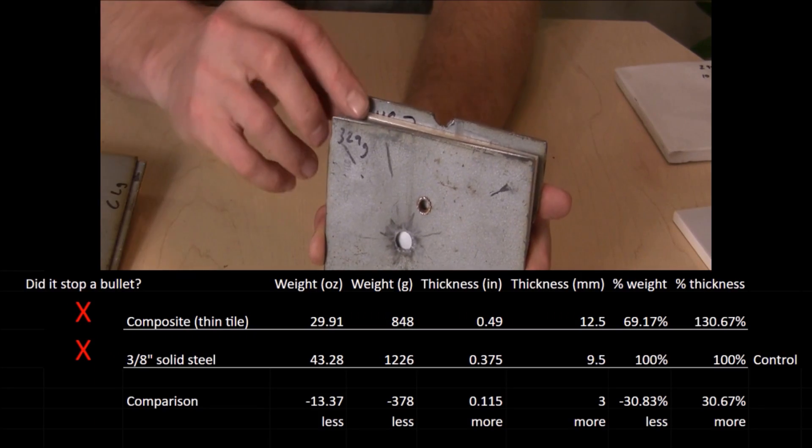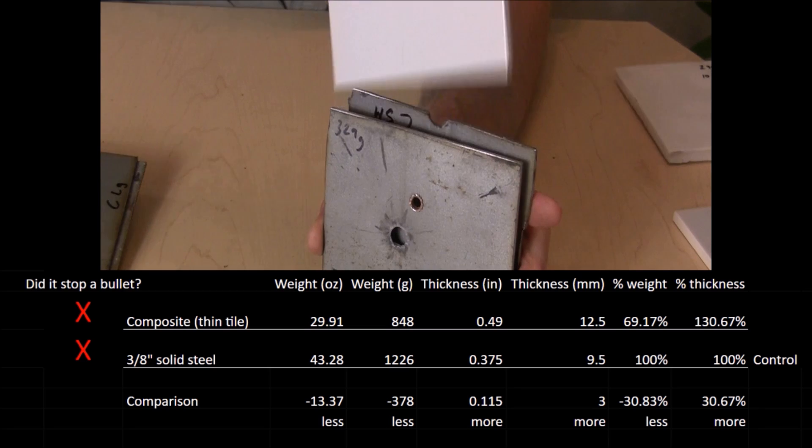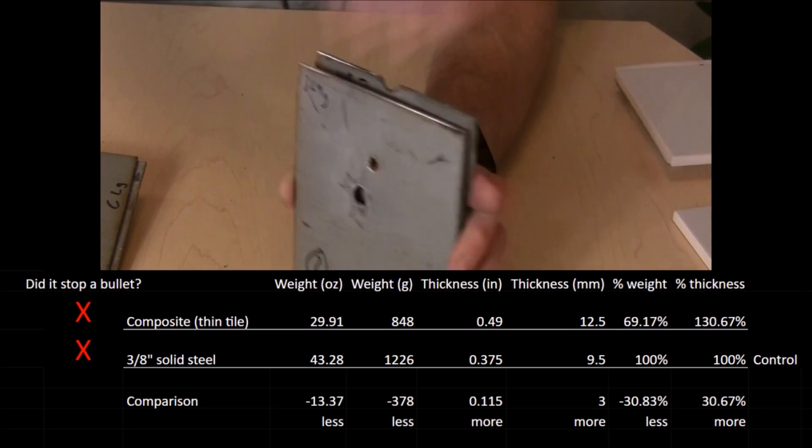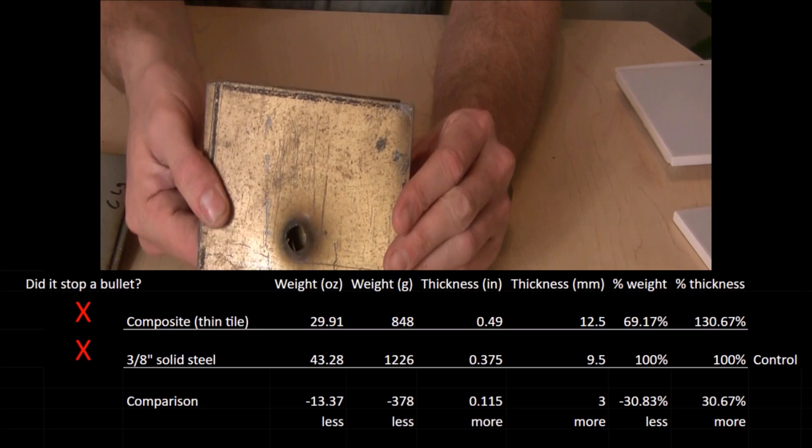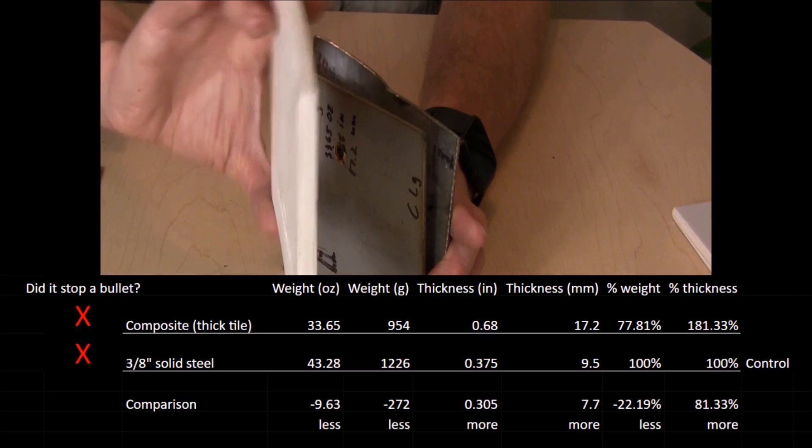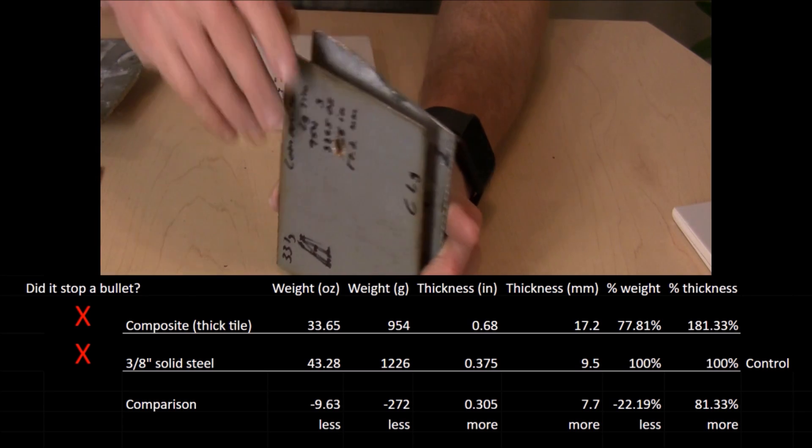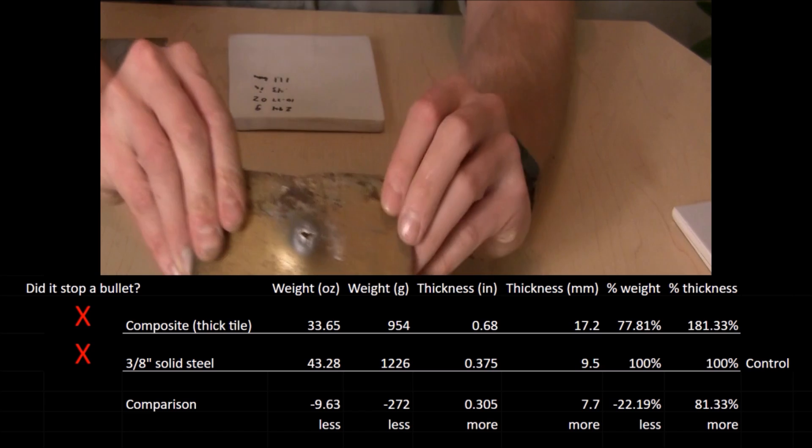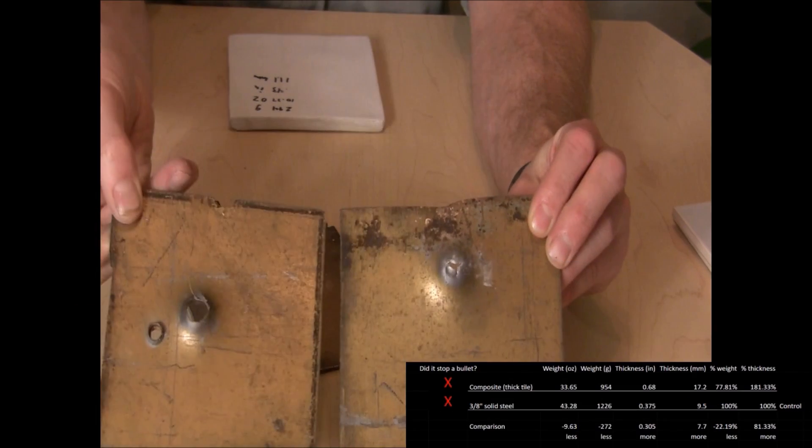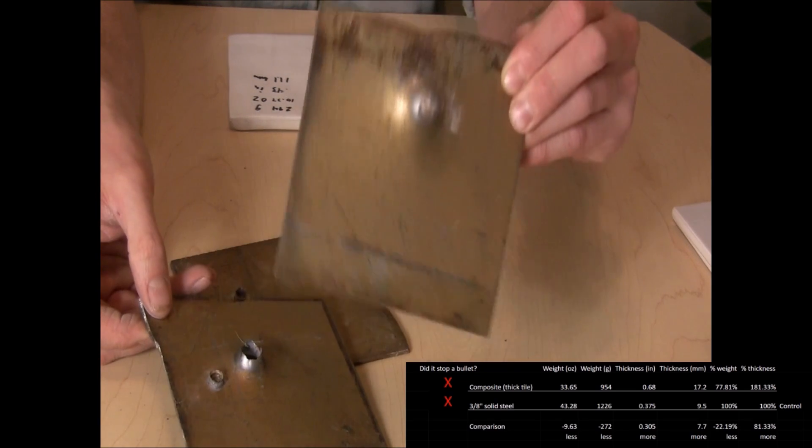The first composite target with the thin piece of 1/4 inch ceramic was not enough to stop a 5.56. When we used a thicker tile, it seemed to help a little bit by the far less catastrophic damage on the rear plate compared with the thin tile, but it still wasn't any better than the control.